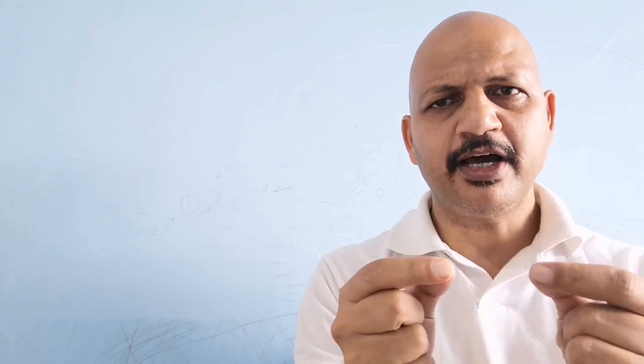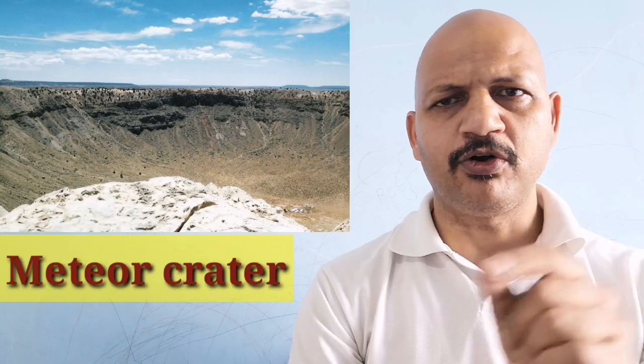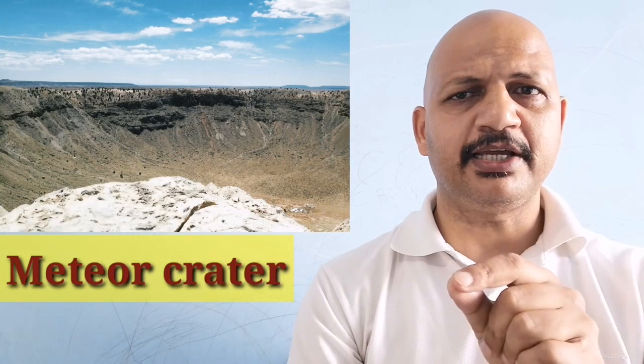The small pieces of rocks which move around the sun are called meteoroids or ulka pind. These meteoroids sometimes come closer to the Earth and tend to fall on the surface. But due to friction with the air, they are burned and this causes a flash of light. Sometimes they are not fully burned and they fall on the surface of the Earth and create hollows or craters.